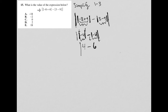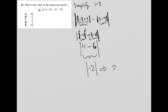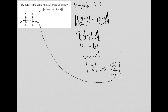But I still do need this outer absolute value. Inside I have four minus six, which equals negative two. The absolute value of negative two is equal to positive two. Therefore, my correct answer is choice D.